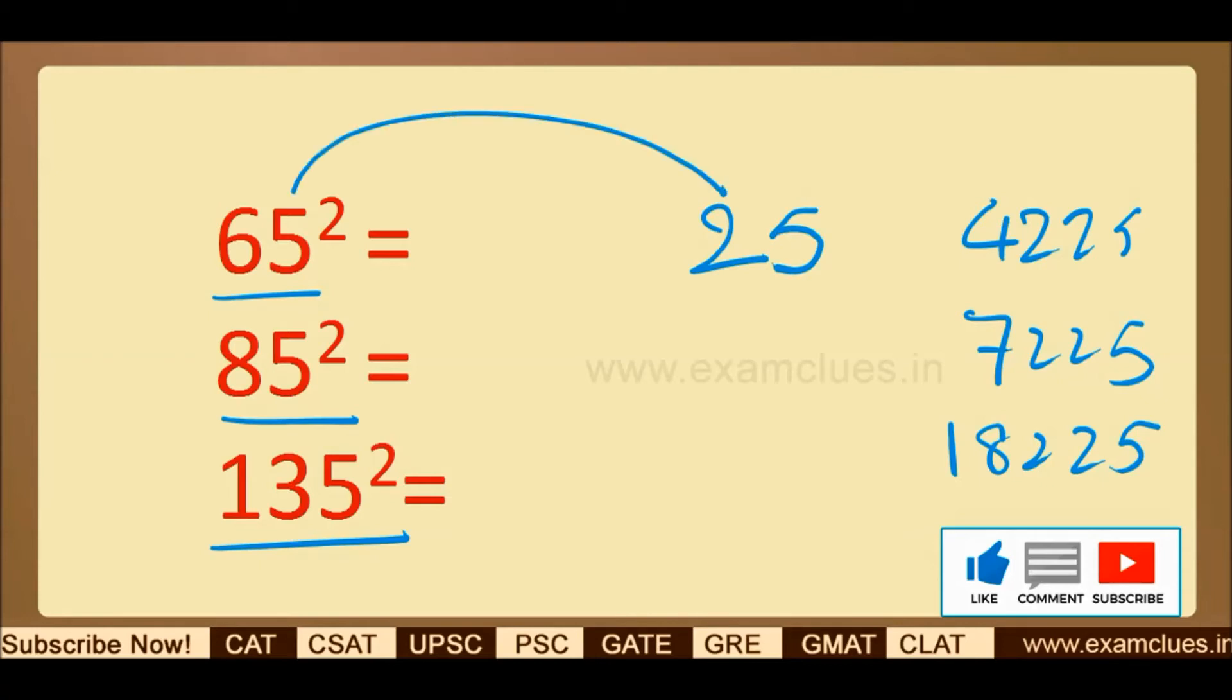The next step is multiply the remaining part with its next integer. That is 6 into 7 equals 42, 8 into 9 equals 72, 13 into 14 equals 182.